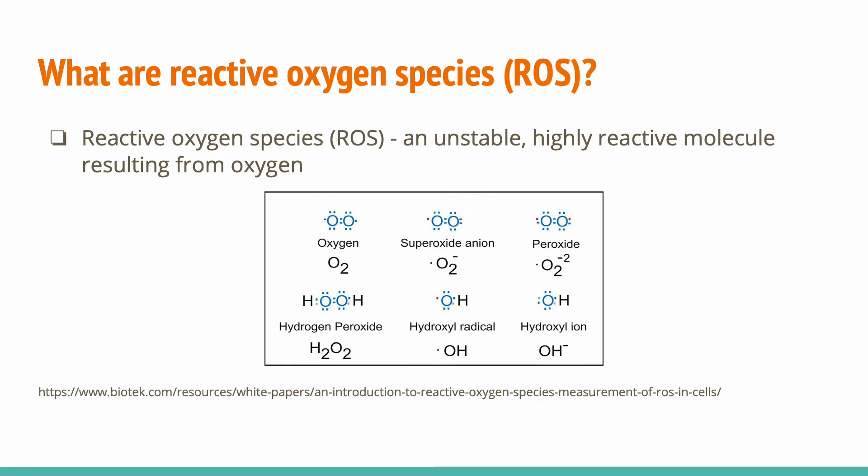A little bit of background. What are reactive oxygen species? Reactive oxygen species, also known as ROS, are a type of unstable, highly reactive molecule that results from oxygen. The ROS include oxygen itself, the superoxide anion peroxide, hydrogen peroxide — which is of particular interest for this project — the hydroxyl radical, and the hydroxyl ion.